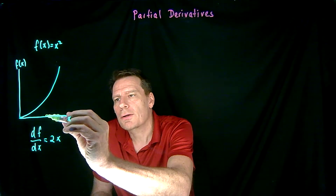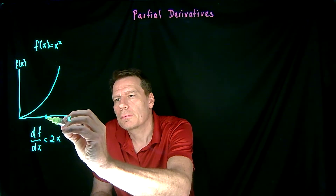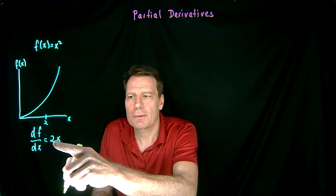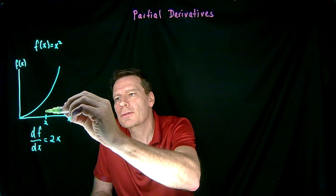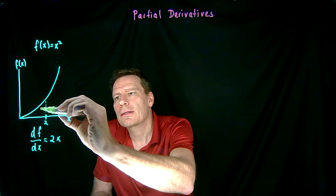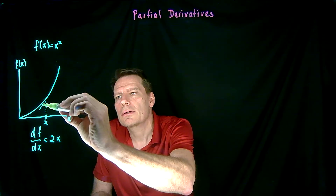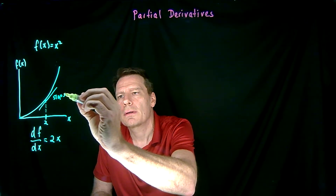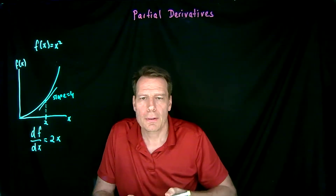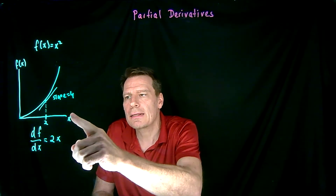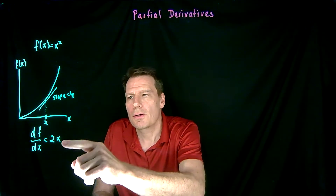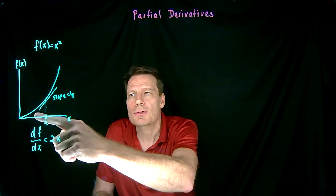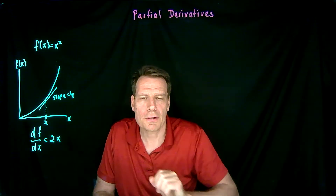So if we look at the value of 2, for example, we can simply plug in 2 for x, we get 4, and that tells us that the slope of this function at this point is 4. We can similarly do this for any other value of x. So the derivative gives us an expression that allows us to know what the slope is at any point in the function.